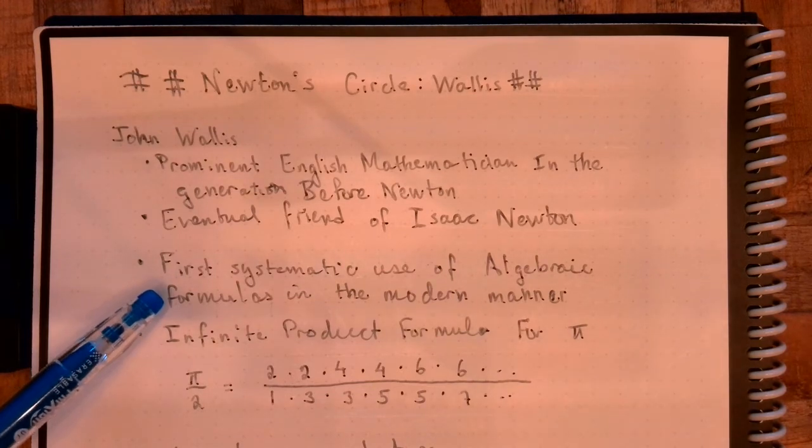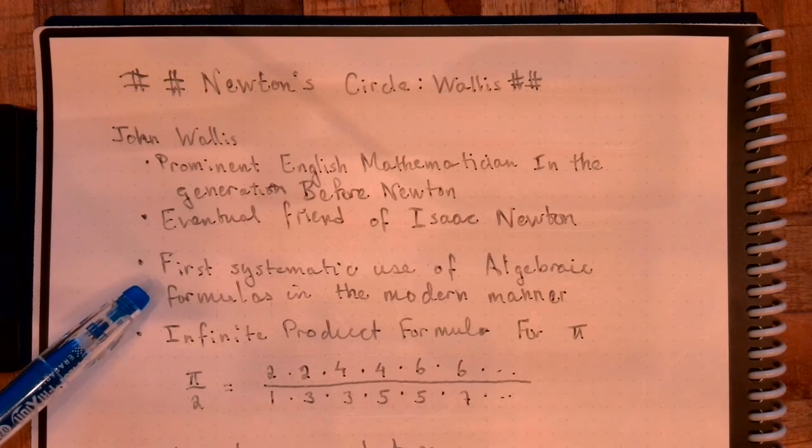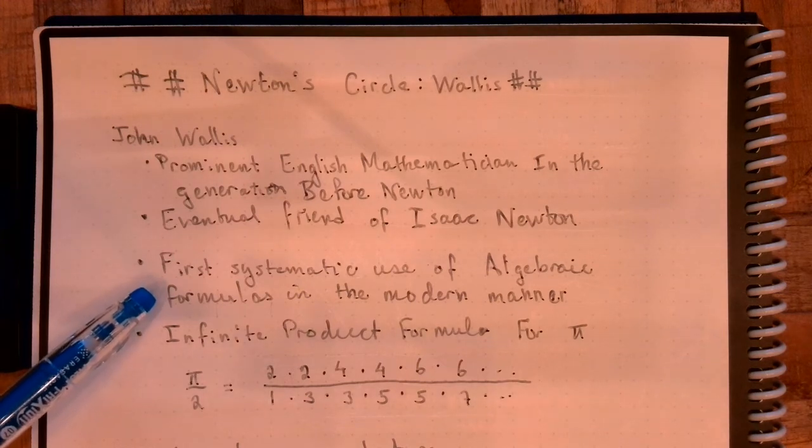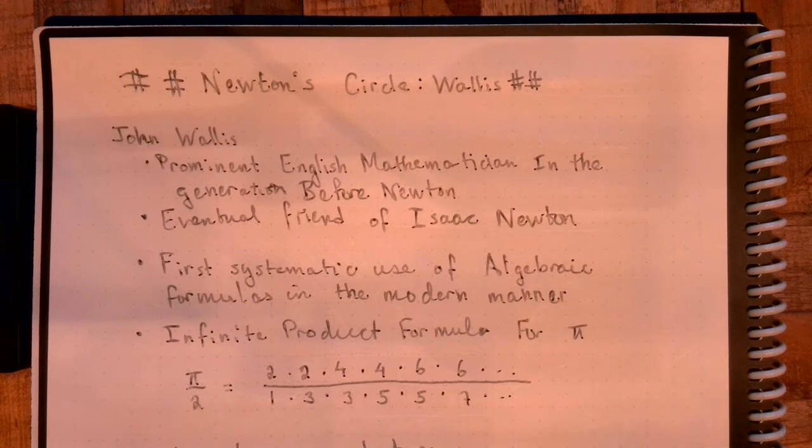However, Viete didn't really use algebraic symbolism in the way that we use it today. And John Wallis is the first recorded individual to write things the way we would write them. This is actually something we'll go over in a later video. There's a more accessible way to prove this later on. But this is an infinite product formula for pi that John Wallis was able to derive. And it's very elegant. You'll notice the numerator has only the evens and the denominator has exclusively the odds. Of course, this is an infinite product. It continues forever in the sense that the more terms you take, the better the approximation you get to pi over 2.